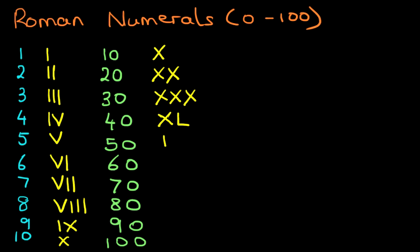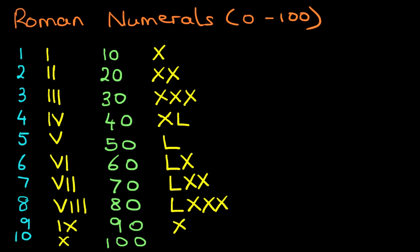50 is L. 60 is LX. 70 is LXX — that's 50, 60, 70. 80 is LXXX — 50, 60, 70, 80. How do we write 90? 90 is 10 before 100. The symbol for 100 is C, so 90 is XC.